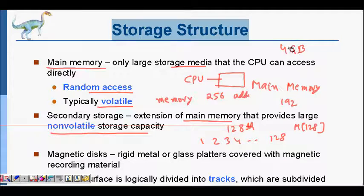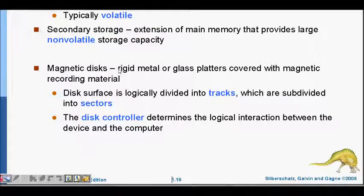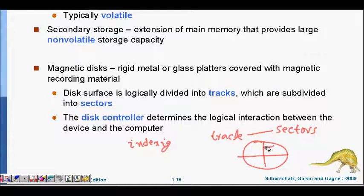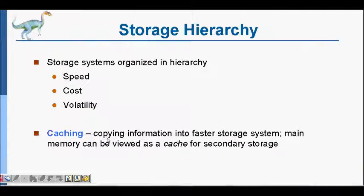The size of RAM nowadays in your laptops is about 4 GB, but your hard disk might be 500 GB. Magnetic disks — rigid metal or glass platters — are bigger storage devices. Your disk is divided into tracks, and those tracks are again divided into sectors. There is a disk controller, which is a device controller that allows interaction between your hard disk and your CPU.